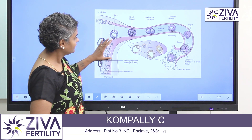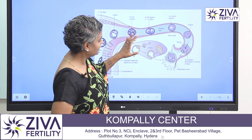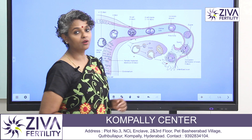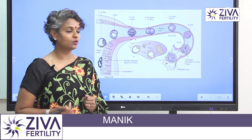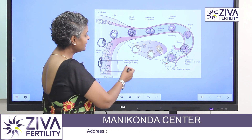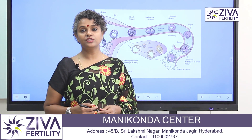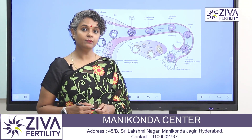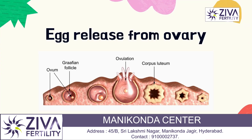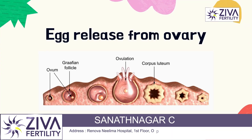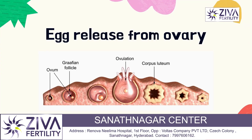This is your endometrium, this is the ovary and this is the tube which is opening towards the ovary. Inside the ovary, there are a number of eggs which are growing, but every month only one gets big and is released from the ovary.